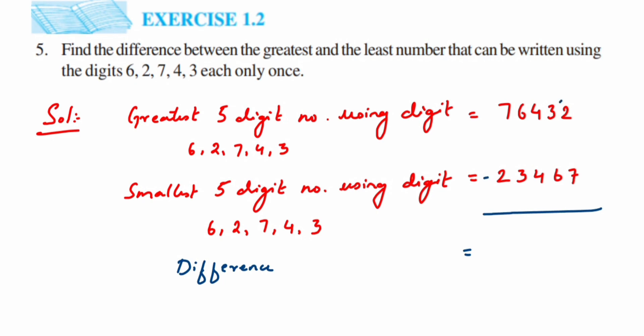12 minus 6 is 6. Next, 3 minus 4, we cannot do, so we borrow from 6. 6 becomes 5, and 3 becomes 13. 13 minus 4 is 9.